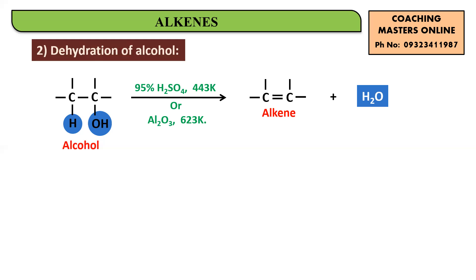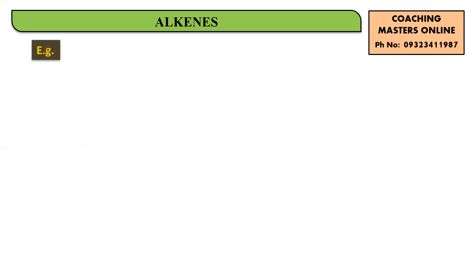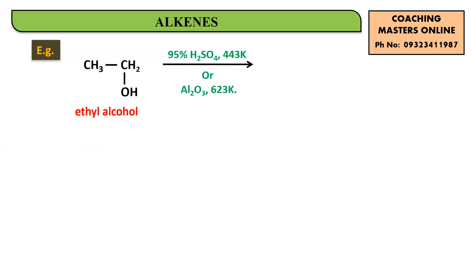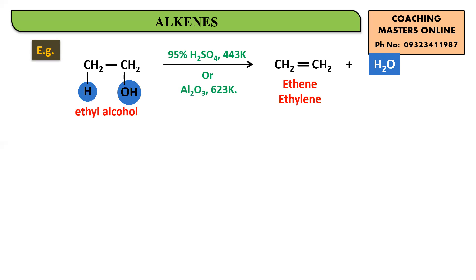Let's have a look at examples for this reaction. If you take a molecule of ethyl alcohol — which has an OH group — in the presence of 95% H₂SO₄ at 443 Kelvin or Al₂O₃ at 623 Kelvin, H and OH are removed. You will get a water molecule as the dehydrated product, and you will get CH₂=CH₂, which is ethene or ethylene.